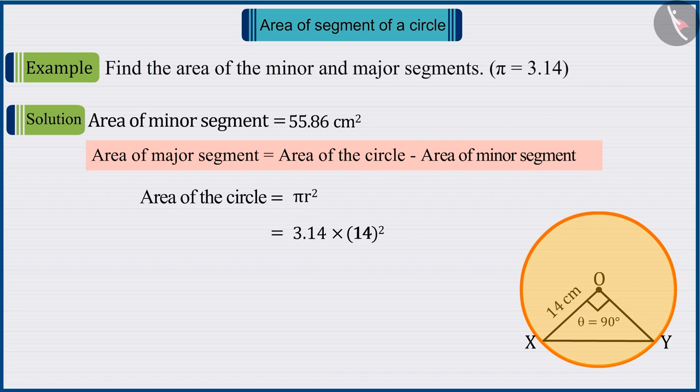Where the area of the circle is 615.44 square centimeters and the area of the minor segment is 55.86 square centimeters.